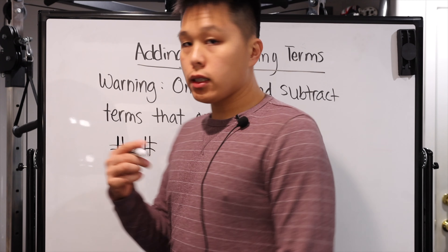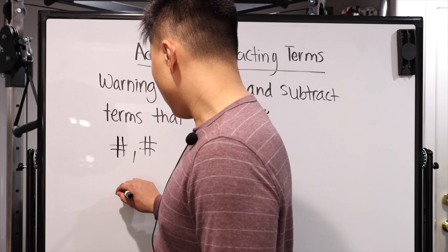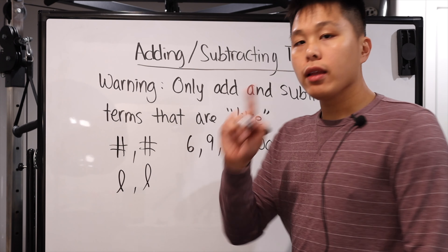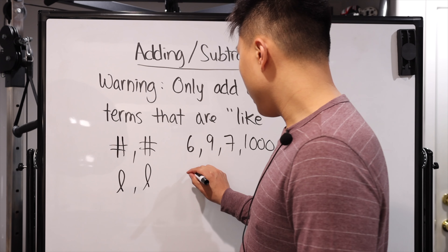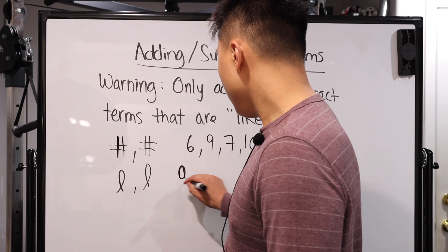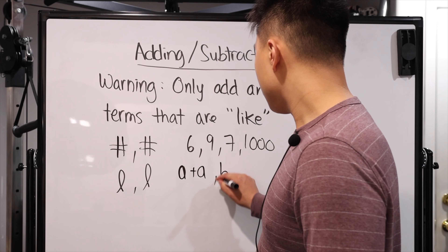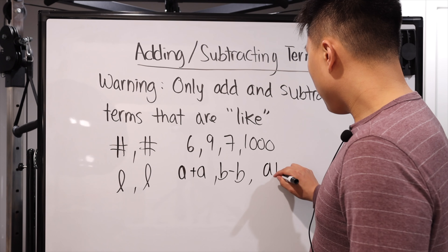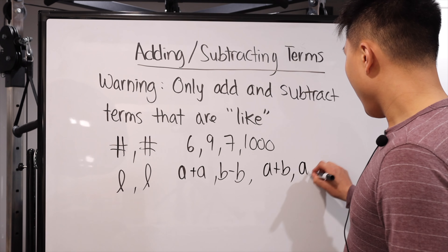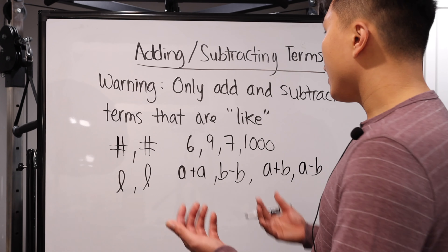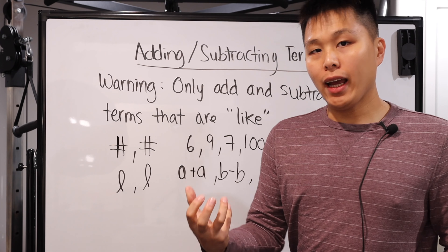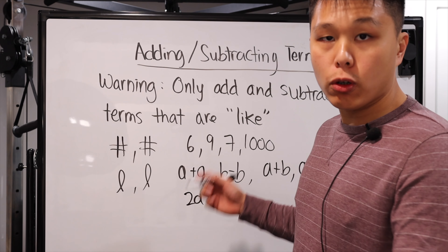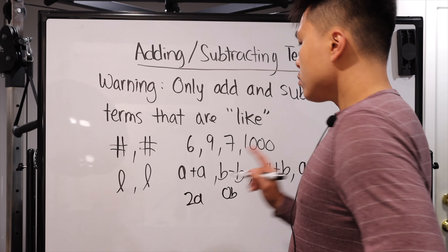Now, if you have variables, the caveat is that they have to be the same variable. So if you had A and another A, you can add them together. If you had B minus B, you can subtract them. However, if you have A plus B or A minus B, you really cannot combine them in any way — they're just going to be stuck like that. The answer for A plus A is 2A, and B minus B is 0B, or just 0.